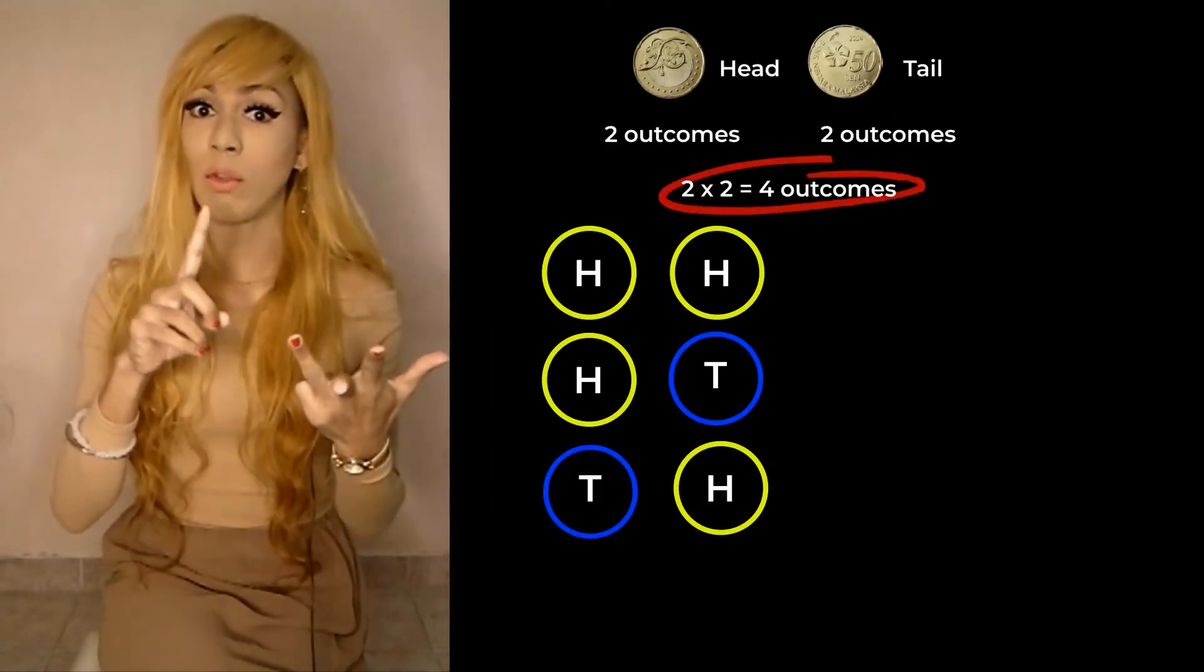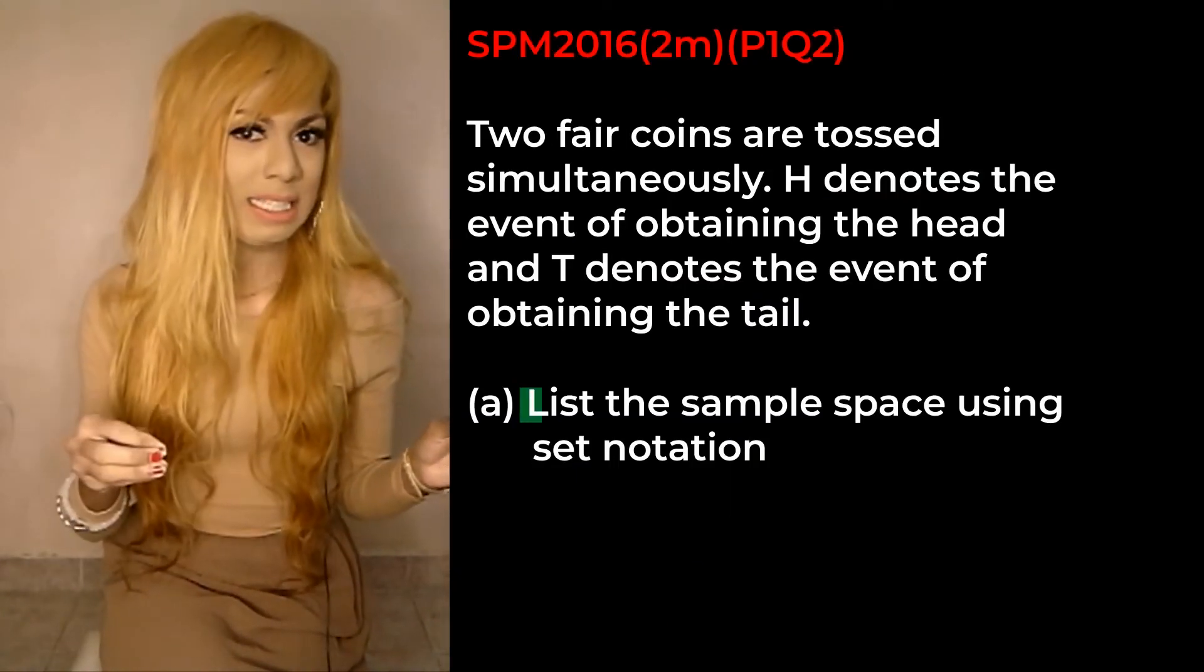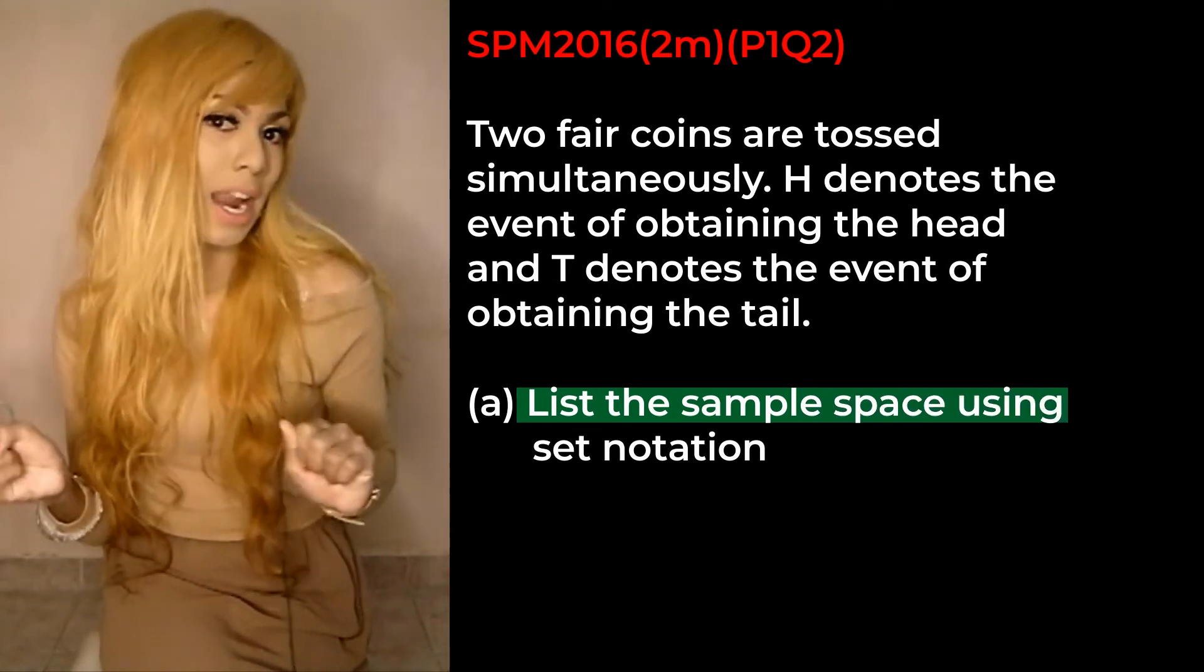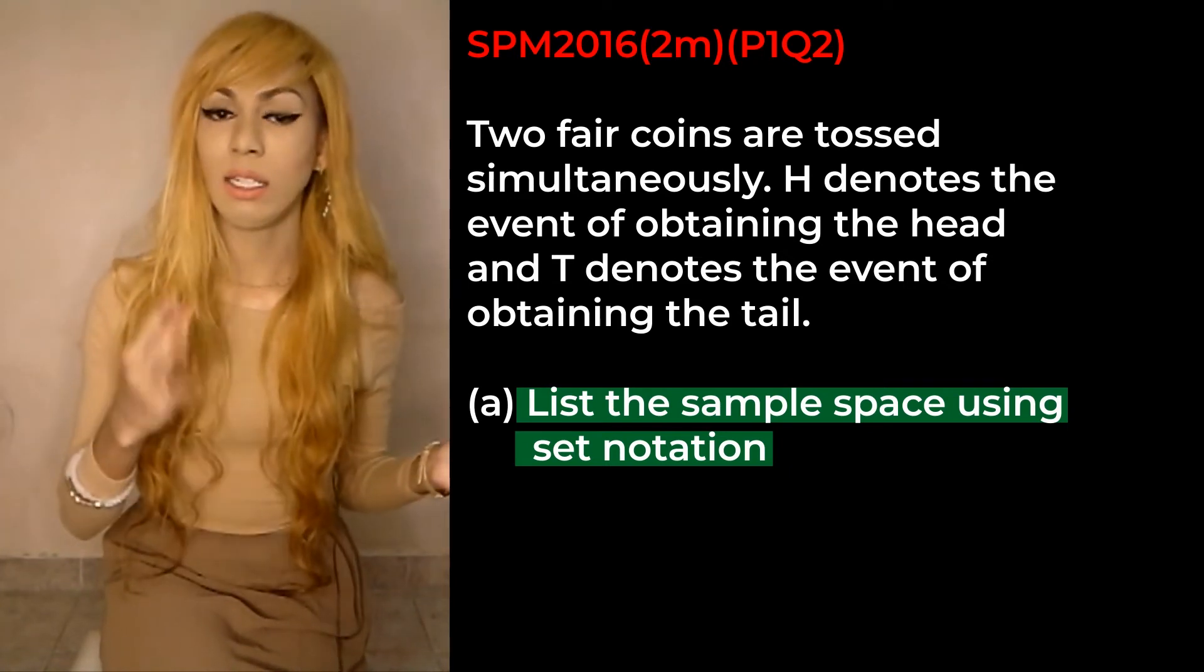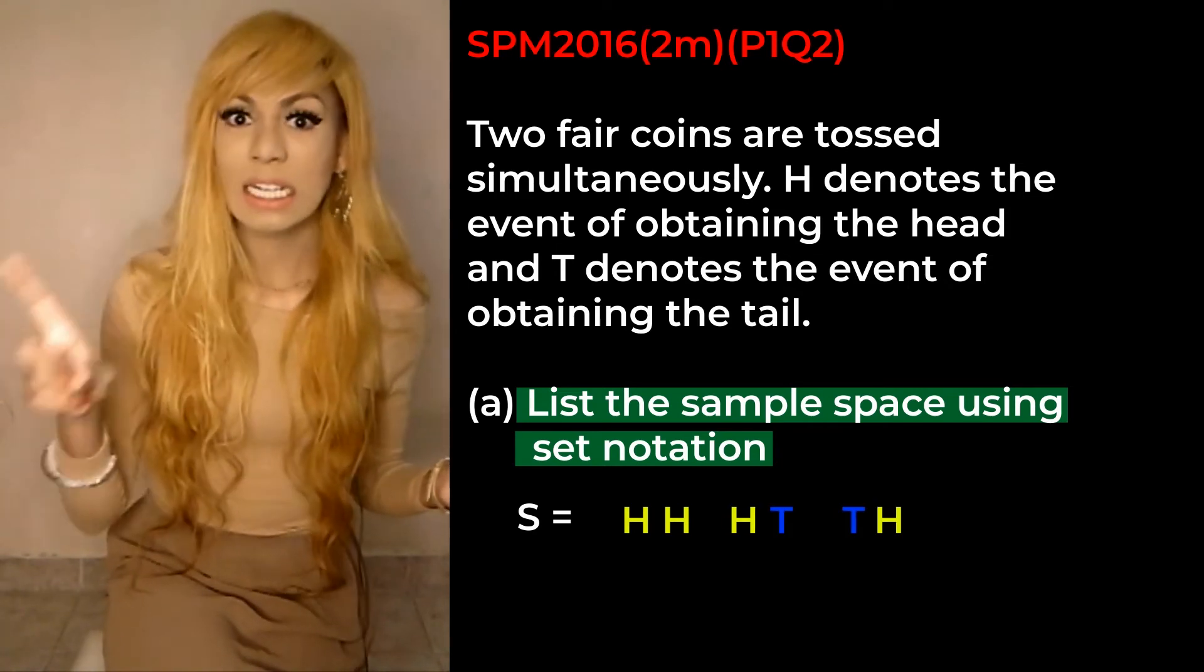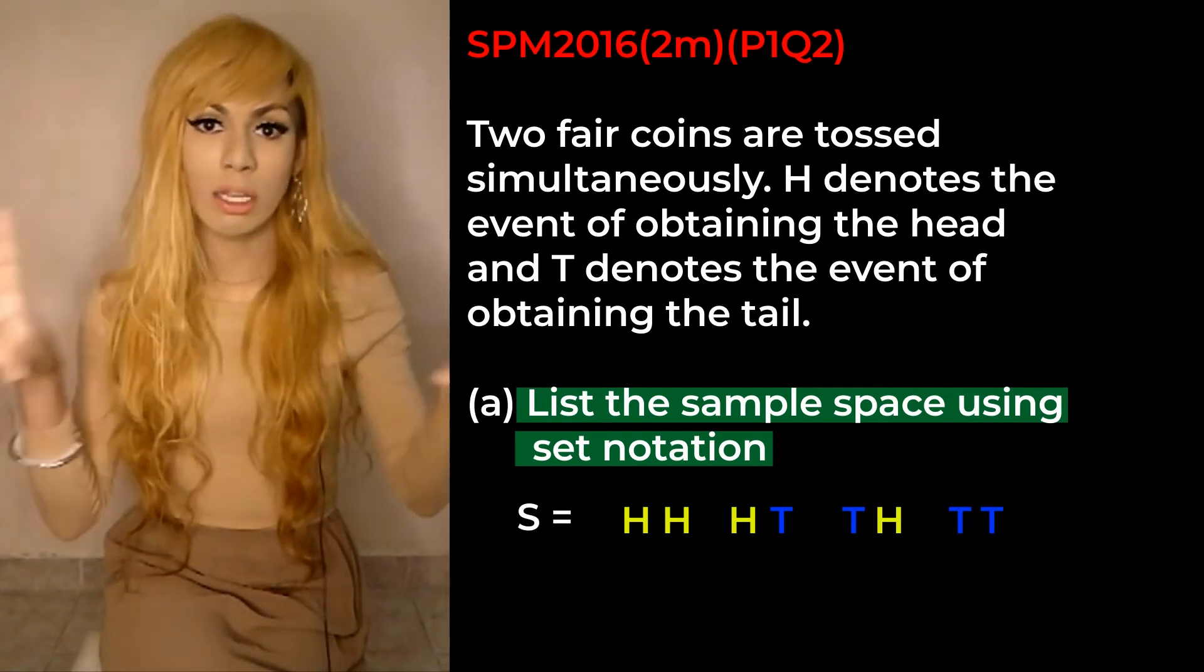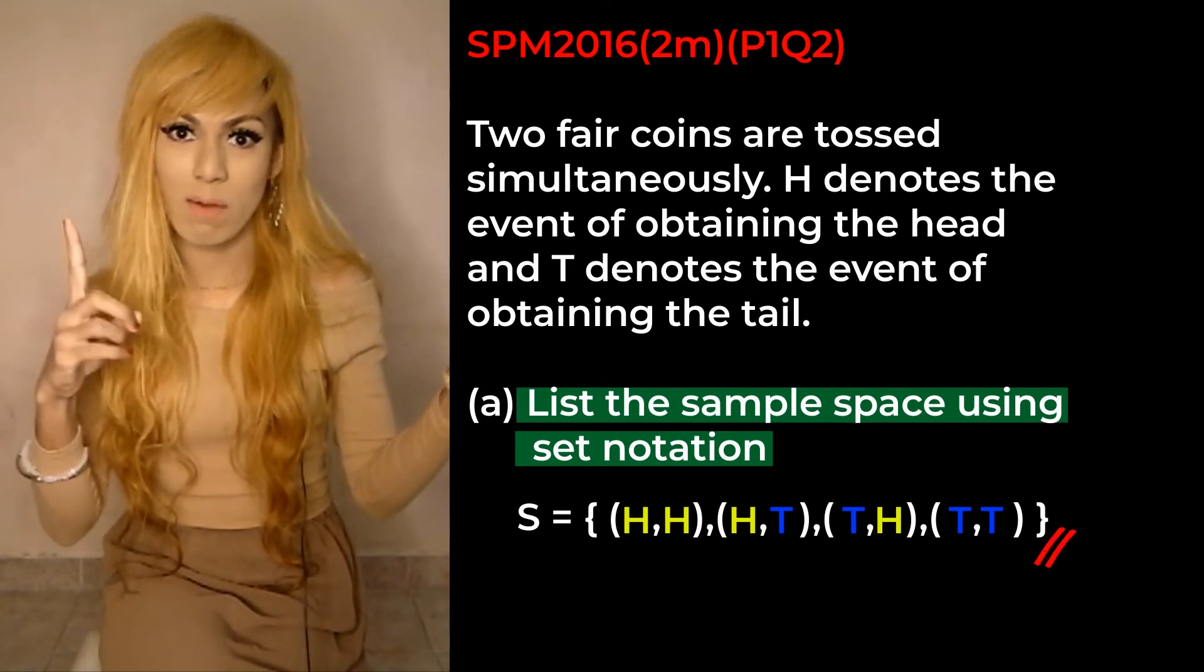As a whole we will just have four outcomes which is head head, head tail, tail head, and also tail tail. Part A question is: list the sample space using set notation. So H for head, T for tail. It will be {HH, HT, TH, TT} and put all the proper brackets like this and there you have it, one mark.